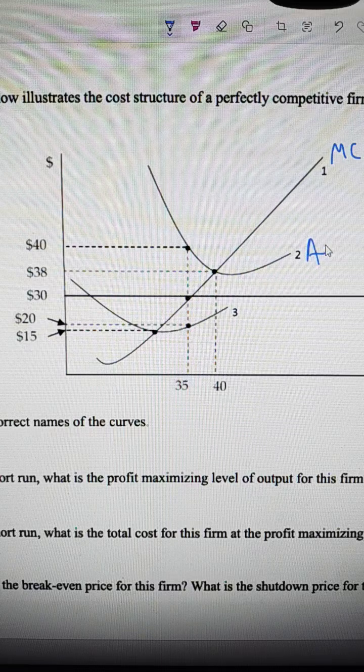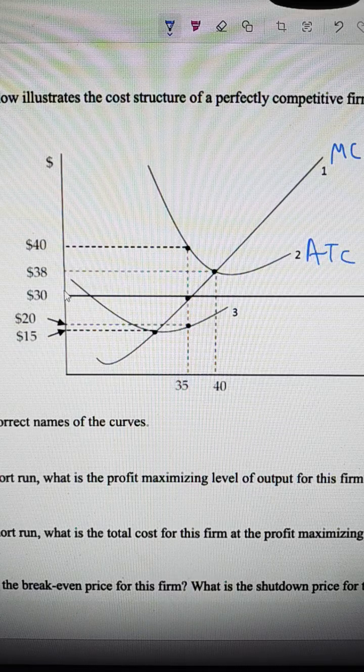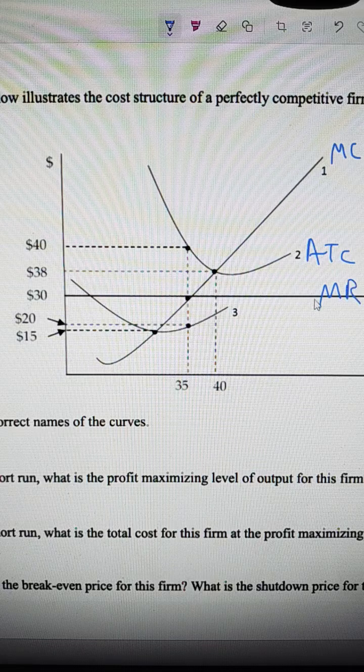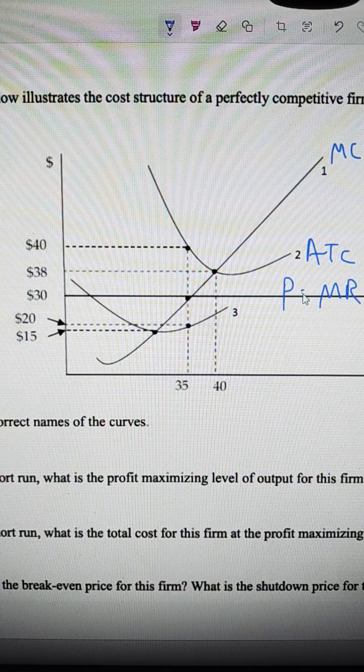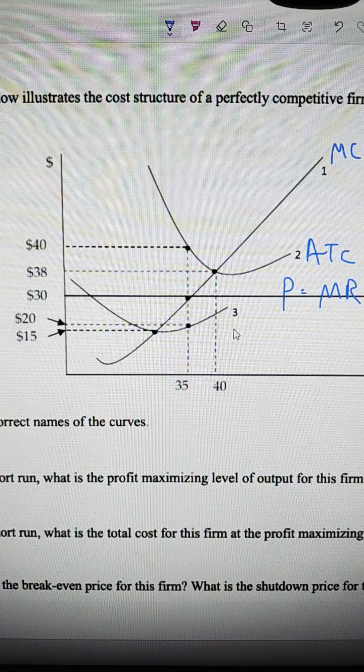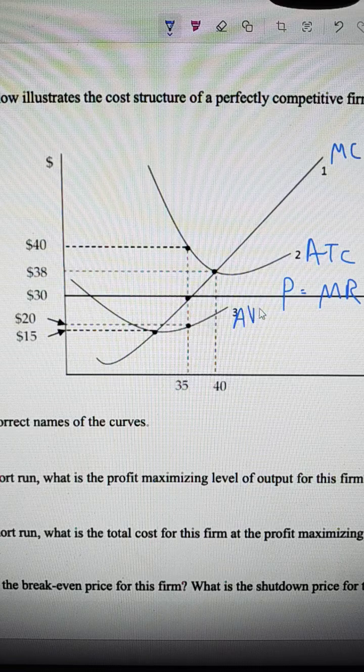This is average total cost. Straight line here. This is marginal revenue, which is also price. This down here is average variable cost.